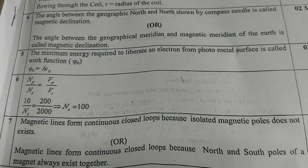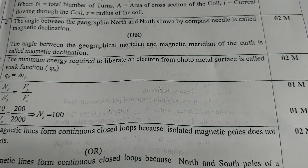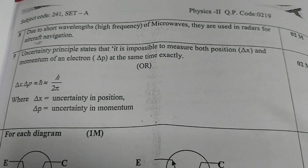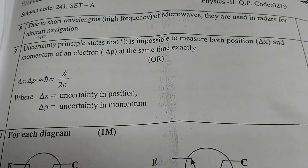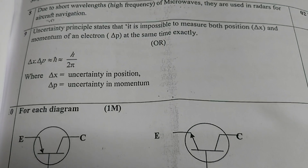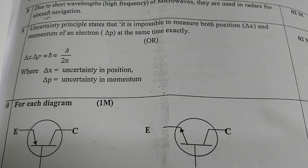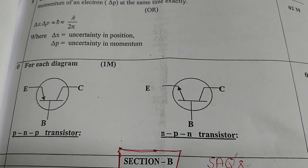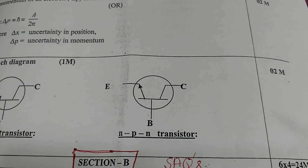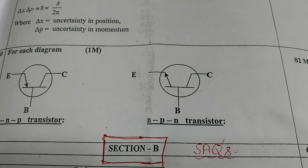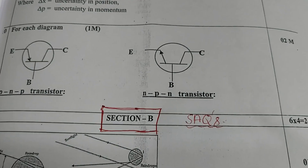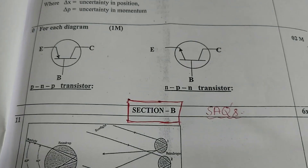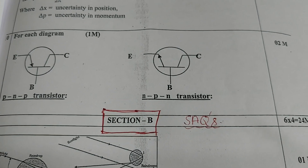Now we move on to the eighth one — VSAQ part. The ninth question and ninth answer follow. For the tenth one, each diagram carries one mark — one plus one equals two marks — for PNP transistor and NPN transistor. Section A, the VSAQ part, is now over.